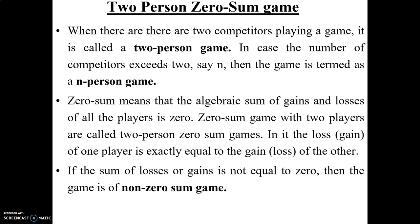Zero-sum means that the algebraic sum of gains and losses of all the players is zero — one person's loss is another person's gain. Zero-sum games with two players are called two-person zero-sum games, where the loss of one player exactly equals the gain of the other. If the sum of losses or gains is not equal to zero, then the game is called a non-zero-sum game.